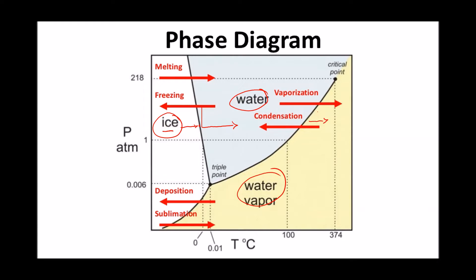This diagram is called the phase diagram and it correlates conditions in terms of pressure and temperature with the different phases of the substance and the six types of phase transitions: melting and freezing between solid and liquid, boiling and condensation between liquid and gas, and deposition and sublimation, which is a direct transformation between solid and gas.